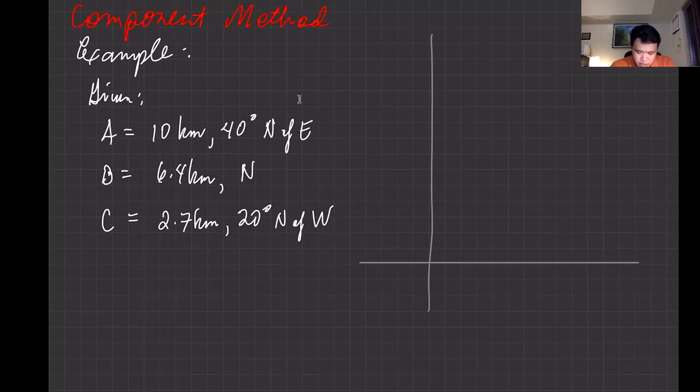Let me use a different color. Vector A is 40 degrees north of east. I already graphed this, but I'll just show you how I graph it. So 40 degrees north of east, about 10 kilometers, somewhere like this—that's your vector A. Then the FX moves north straight, 6.4 kilometers, something like this. Let's say this is your vector B. And then your vector C is about 2.7 kilometers, 20 degrees north of west, a little bit somewhere like this.